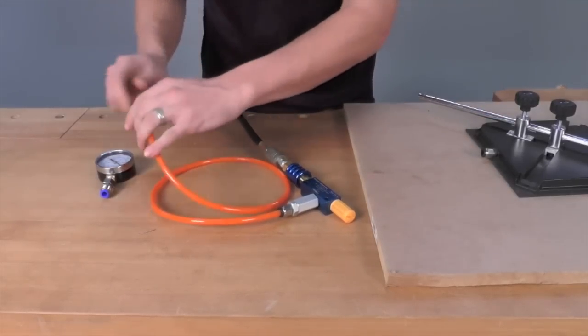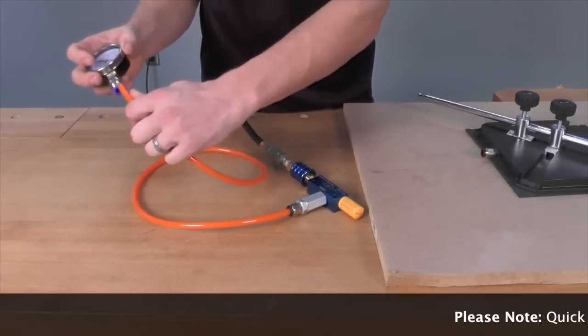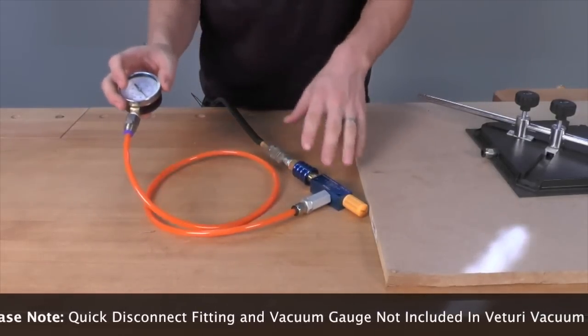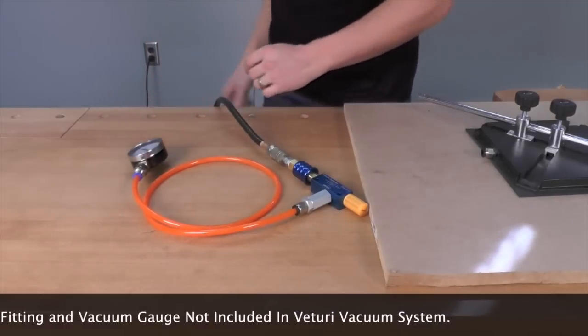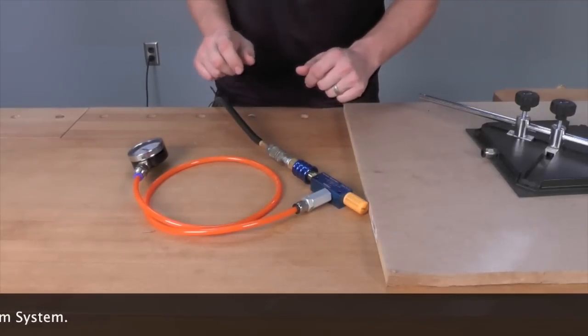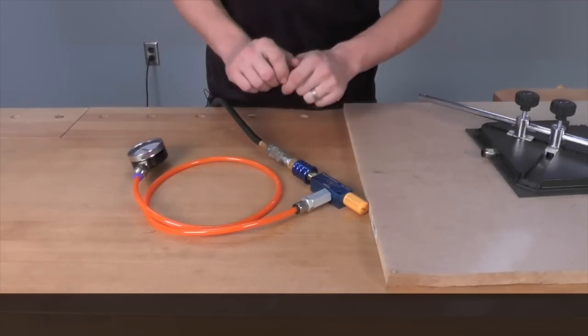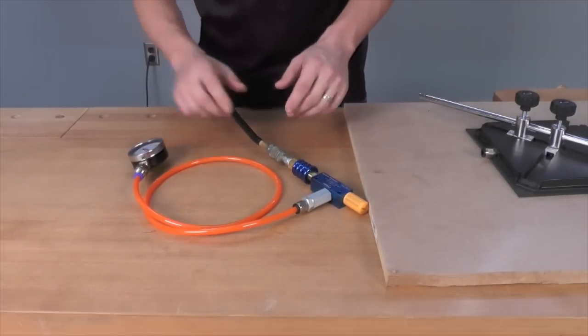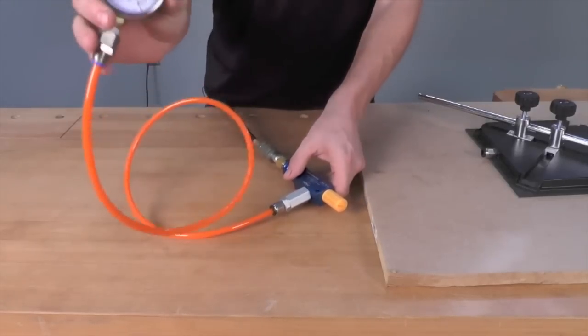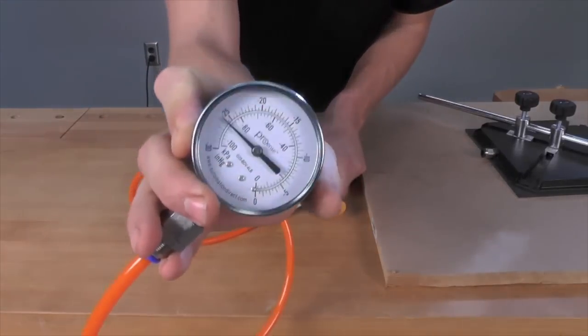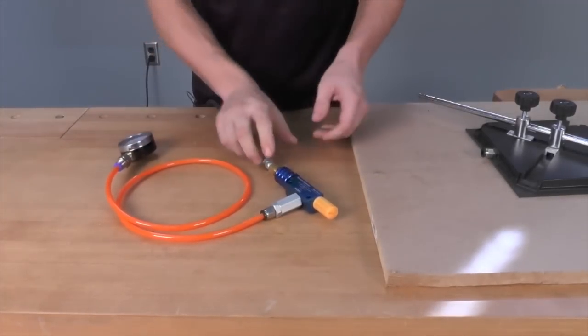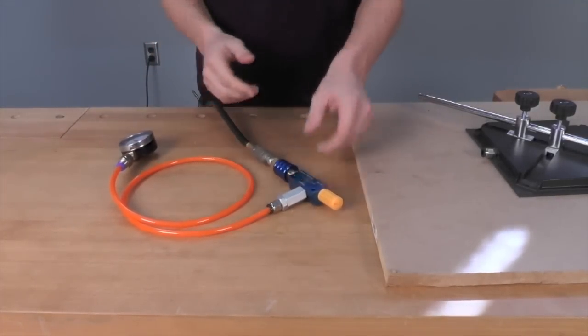I'm going to attach a vacuum gauge so we can get an idea of the amount of vacuum that we can create with this switch. I've got my air compressor set to 80 PSI, so we're only using 80 PSI to create this vacuum. And if we turn on the vacuum switch, we can take a look at the gauge and see we're creating about 26 inches of mercury with the switch.